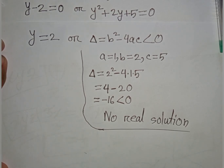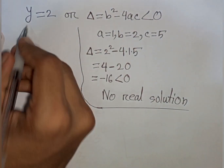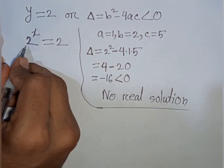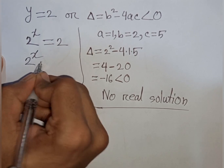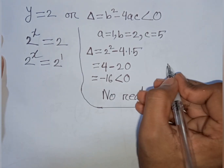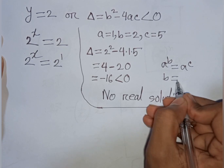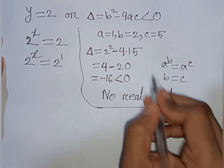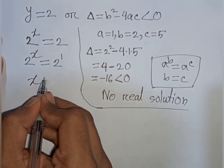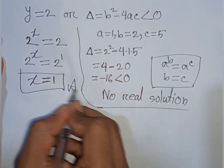Remember that y = 2^x was substituted by y. So 2^x = 2. We can write 2 as 2¹. Since the bases are the same, the exponents must be equal, so x = 1. This is the value of x.